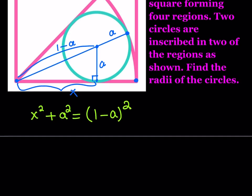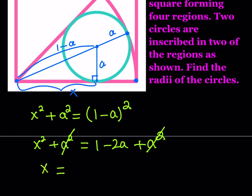Let's simplify this. X squared plus A squared equals one minus 2A plus A squared. A squared cancels out, and if you square root both sides you get X equals the square root of one minus 2A. Of course this is a positive quantity because X is a length, so we're not considering the negative square root. We were able to find X in terms of A.